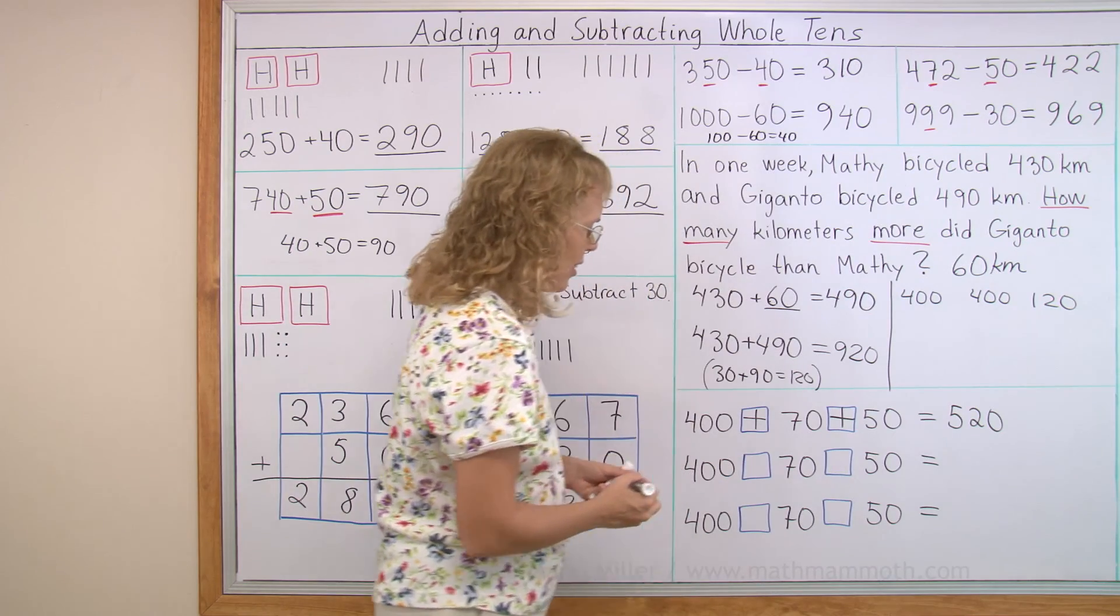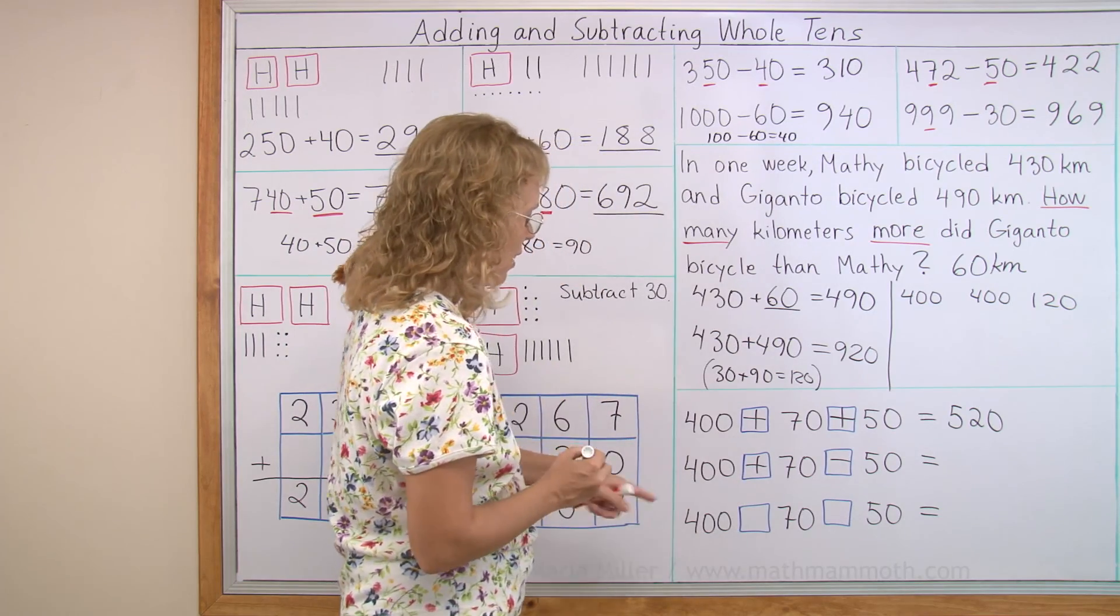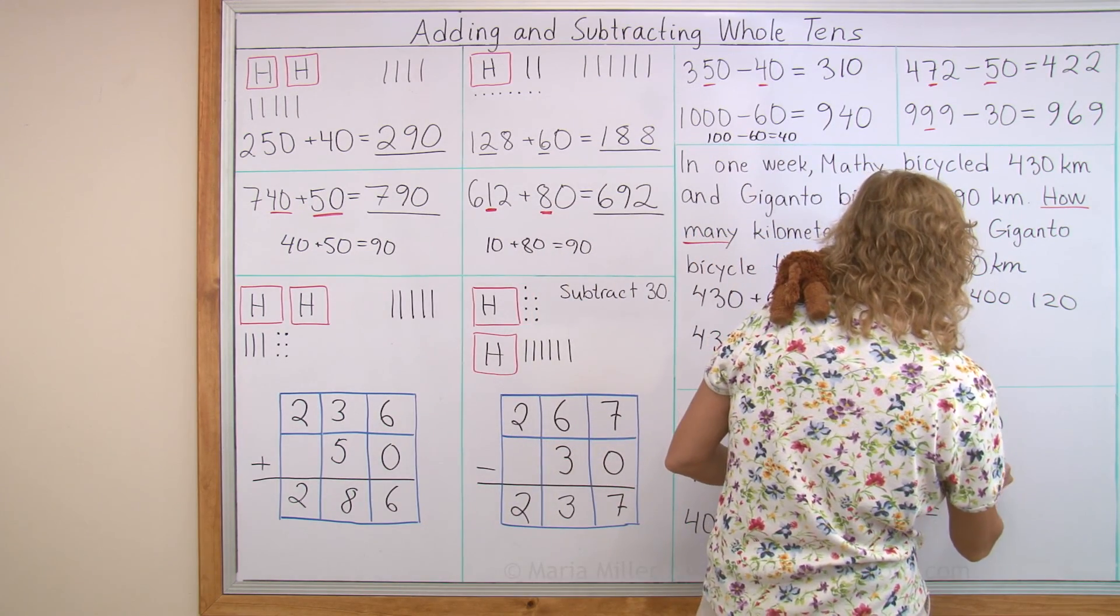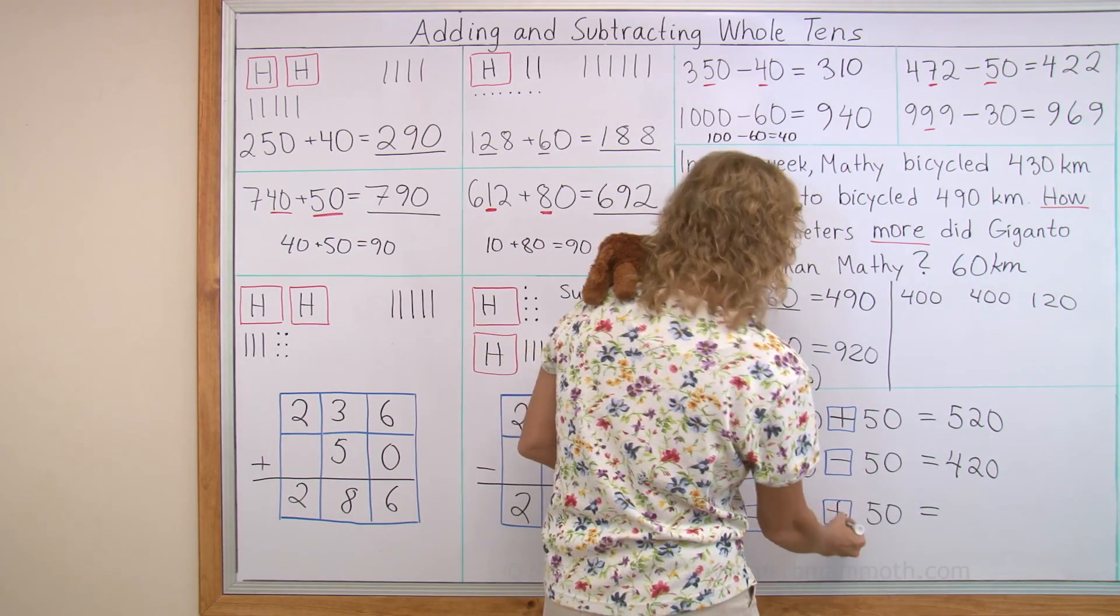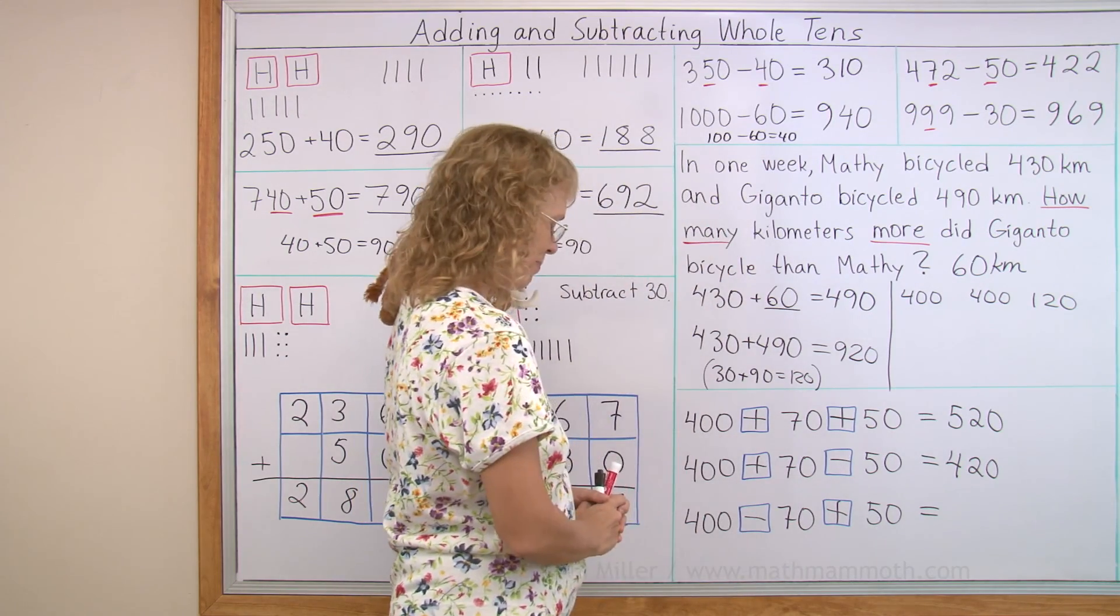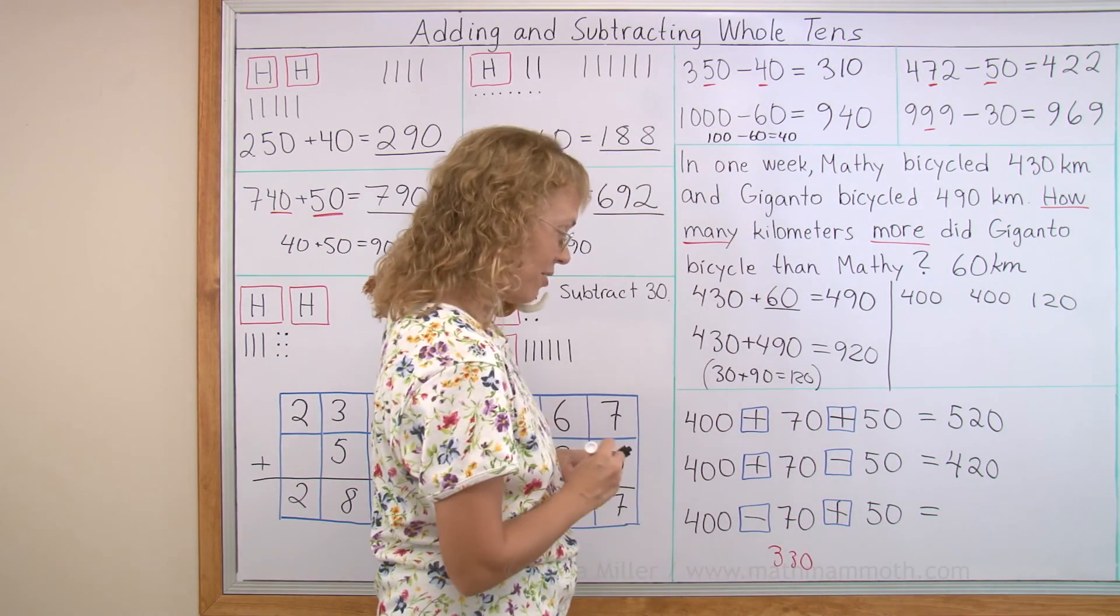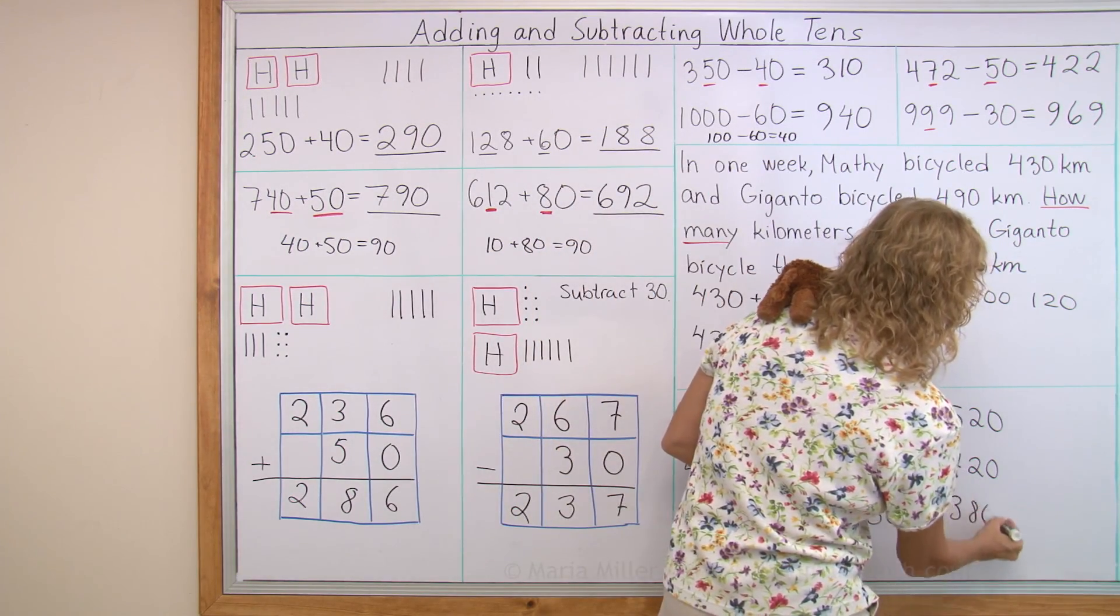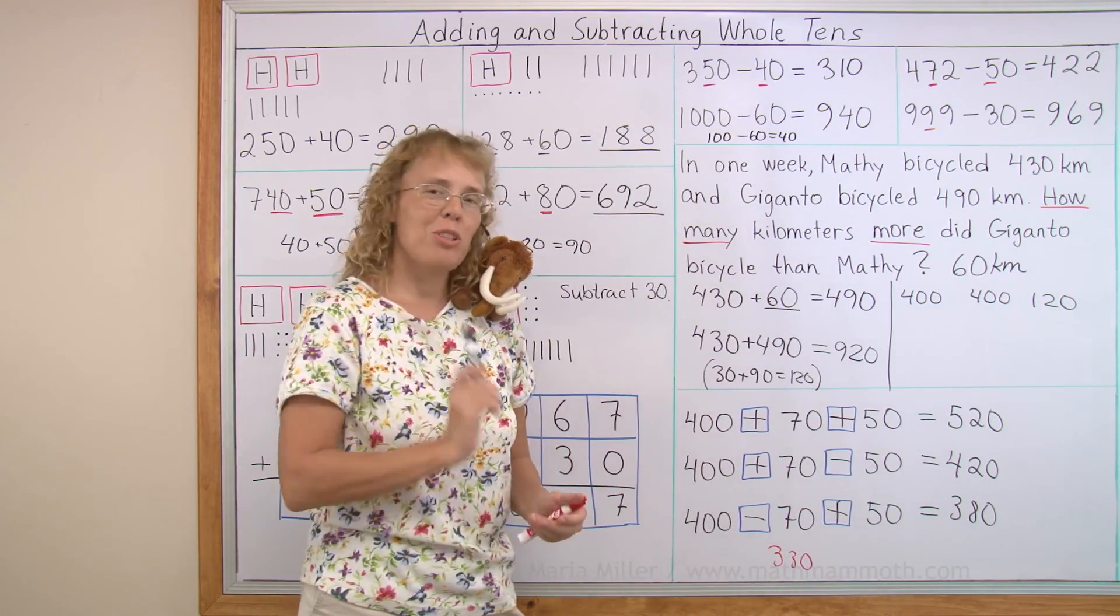And then what happens if I add and subtract? What do I get then? 400 plus 70, 470 minus 50 is 420, just 100 less than here. Or how about if I subtract and add, then what happens? 400 minus 70. That's 330. Yeah, let me write it here. And then add 50 to that. So we have 30 and 50, so we get 380. And I didn't have space for the one other possibility, 400 minus 70 minus 50. But you can do that on your own.